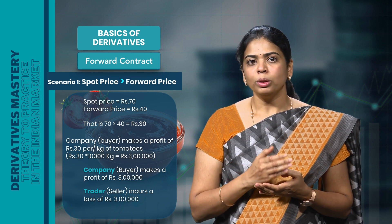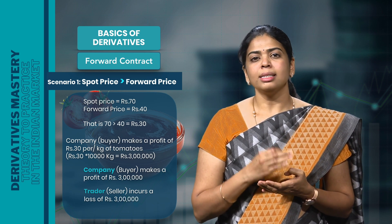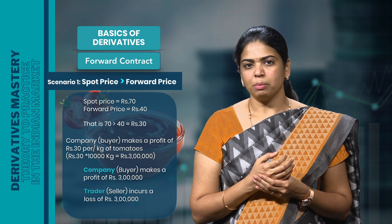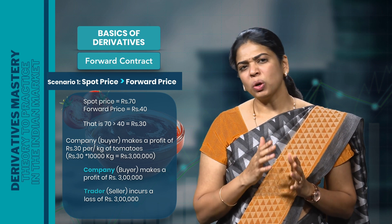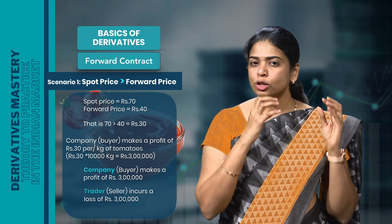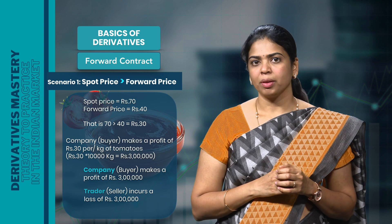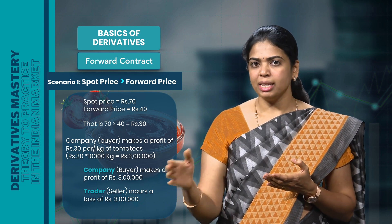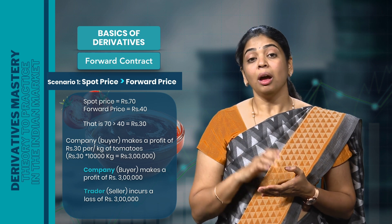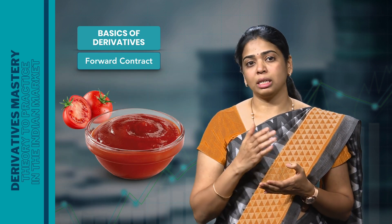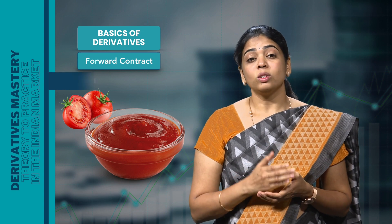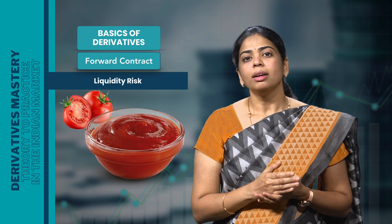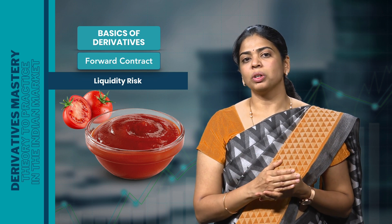In this forward agreement, there is three months' time for expiry. What if, by the end of the first month, the trader senses that the market might not work in his favour and wants to pull out of the contract midway? He can do so, provided he could find someone else in his place to continue the transaction. But finding that someone is going to be a herculean task. Thus, it is very evident that a forward contract is subject to liquidity risk — it is not easy to get out of the contract midway.